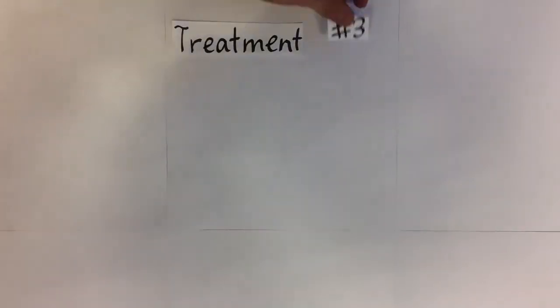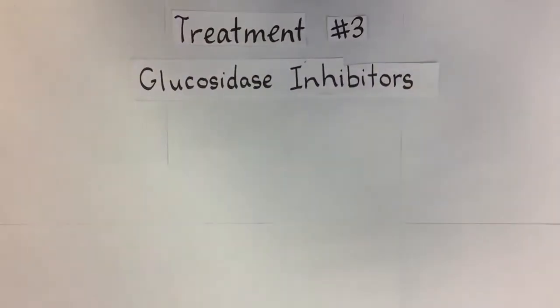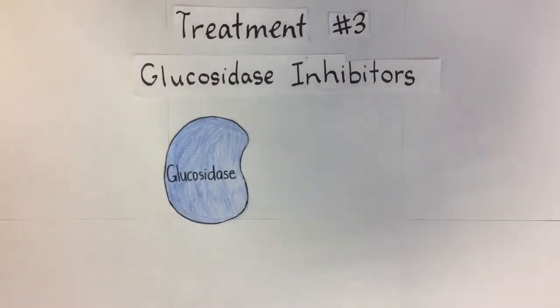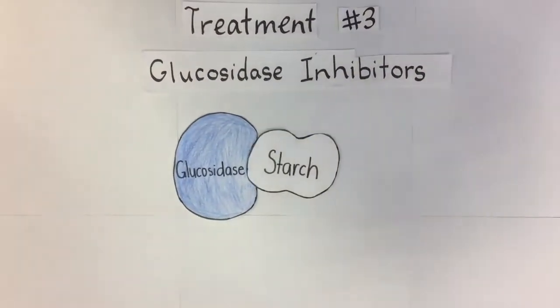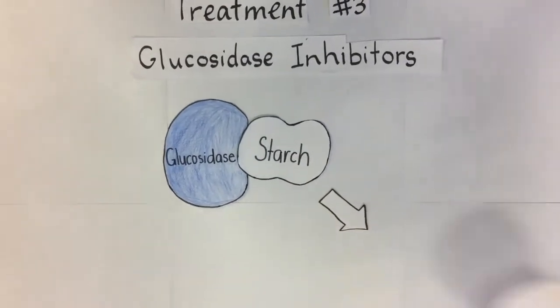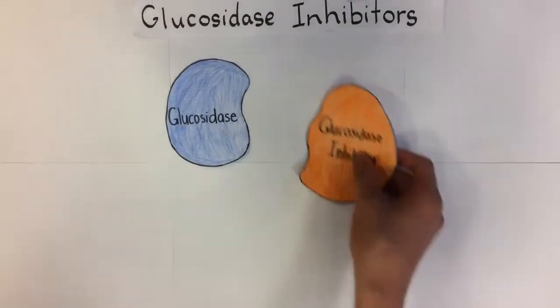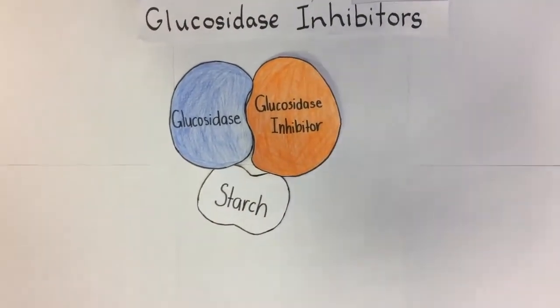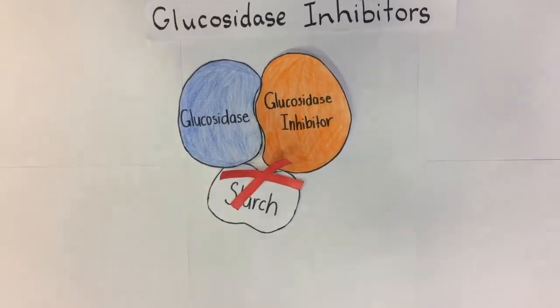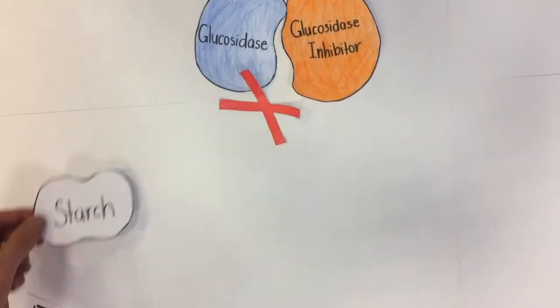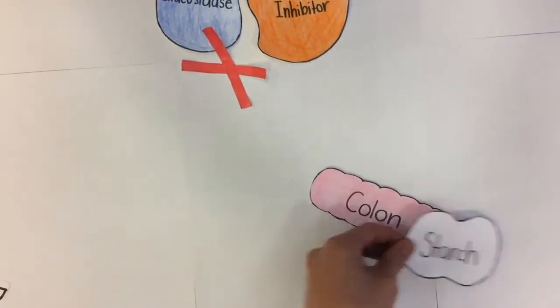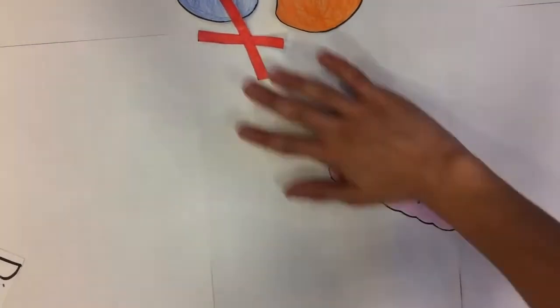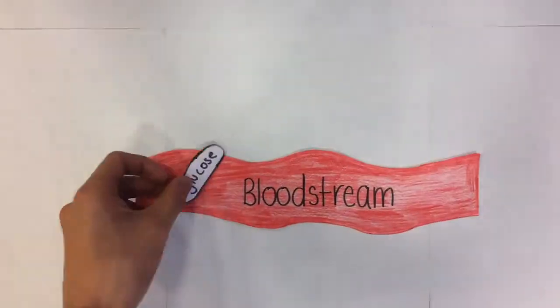Lastly, another treatment method is the use of glucosidase inhibitors. Glucosidase is an enzyme which breaks down starch into monosaccharides like glucose for the body to absorb. With inhibitors inhibiting glucosidase, starch is not able to be broken down and is eliminated through excretion instead. Hence, blood glucose levels will not rise, eliminating the need to produce more insulin.